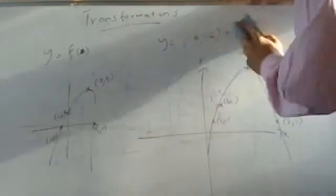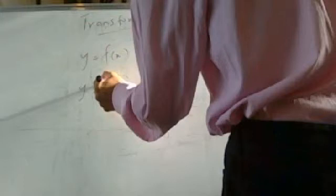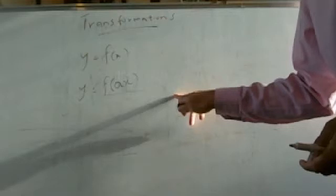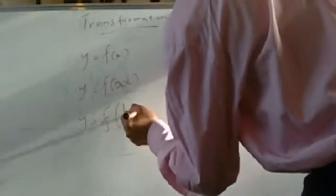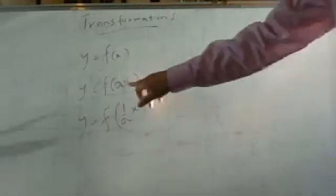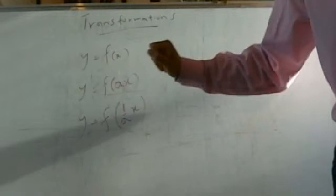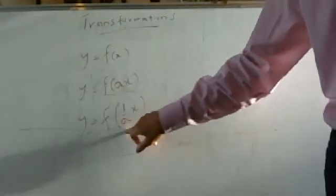Now let's try a different type of transformation. It's not only addition and subtraction you can do — you can also do multiplication and division. So if you've got y equals f(ax), that means the values on the x-axis are actually divided by a. So if a was 2 and you had an x-value of 4, it becomes 2, because 4 divided by 2 is 2. On the other hand, if you have y equals f(x/a), that means you multiply all the x-values by a. Whenever it's inside the bracket, you do the opposite operation to x-values.